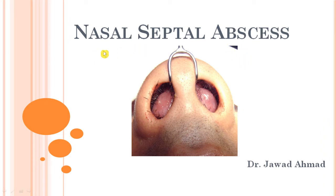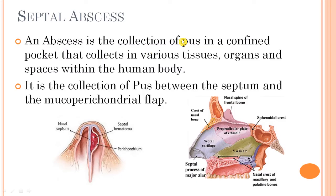First, the terms require a little explanation. An abscess is a collection of pus in a confined pocket that collects in various tissues, organs, and spaces within the human body. The abscess usually develops after an infection, which is usually bacterial, and those bacteria produce pus that accumulates and forms the abscess.